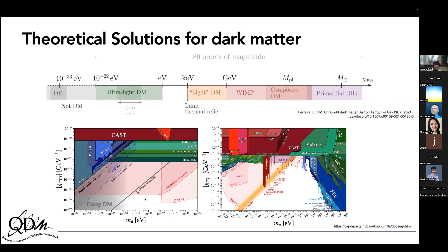I've borrowed these exclusion plots from Kieran. We can see that the twisted anion cavity has a projected exclusion covering a parameter space that no one else can really operate in — this really ultralight mass regime. For reference, more famous experiments like ADMX and ORGAN sit in the micro electron volt range searching for axions. All of those haloscopes are operating in a very different mass range; we're operating at much lower masses.